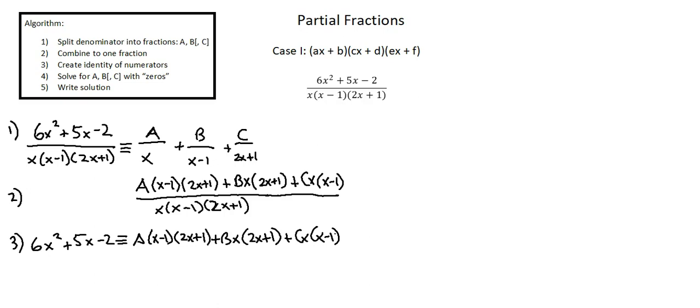Step four. Solve for A, B, and if necessary as is in this case C with zeros. So in step four what I want to do is by inspection evaluate the right side of the identity to determine which x inputs will simplify the expression so that I can solve for one value at a time: A, then B, then C.